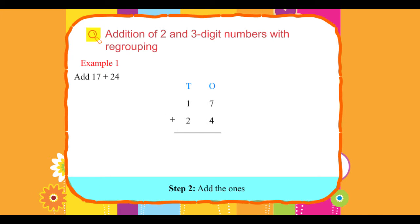Step 2: Add the 1s. 7 1s plus 4 1s equal 11 1s. Since 10 1s equal 1 10, 11 1s equal 1 10 plus 1 1.